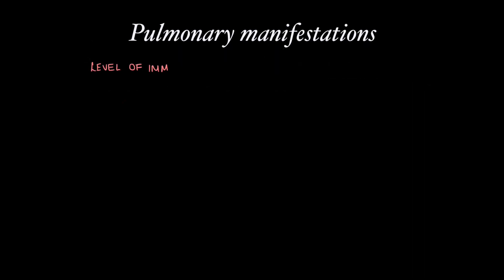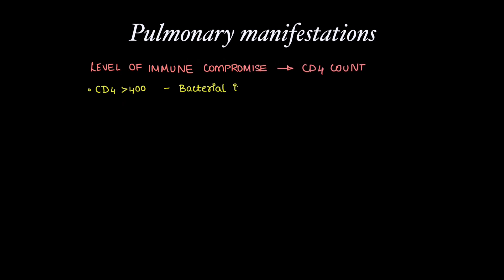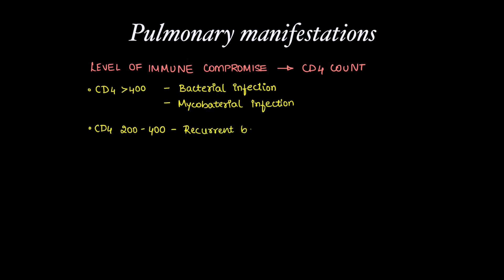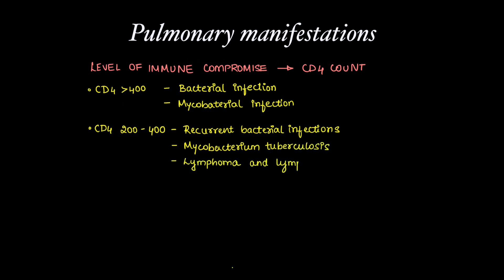The pulmonary manifestations of HIV depend on the level of immune compromise, indicated by the CD4 count. When CD4 count is more than 400, there can be bacterial infections, mycobacterial infections, etc. When CD4 count is between 200 to 400, there can be recurrent bacterial infections, mycobacterium tuberculosis, lymphoma, and lymphoproliferative disorders.